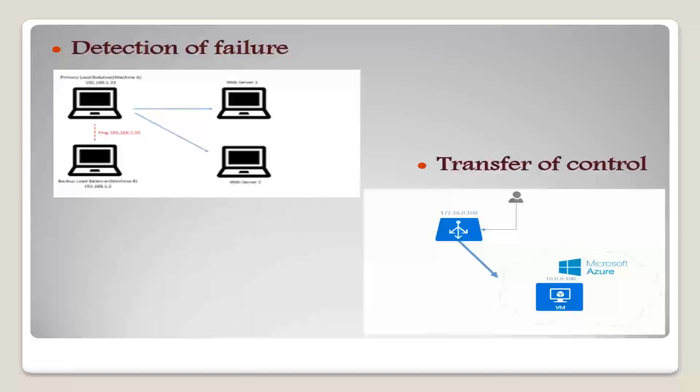To transfer control back to the old primary when it recovers, the old primary must receive redo logs from the old backup and apply all the updates locally.